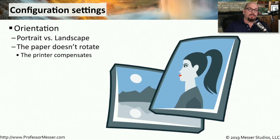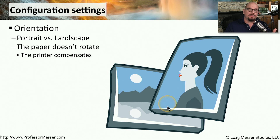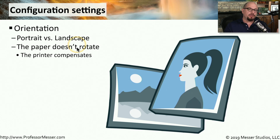When sending the print job, you might also be asked if you want to change the orientation of the printout. This will determine whether it will be portrait mode or landscape mode. A portrait is usually taller from top to bottom, and a landscape is usually wider from left to right. When you're printing, the page on the printer doesn't physically rotate; instead, the printer will change how it's printing depending on whether you choose portrait or landscape.